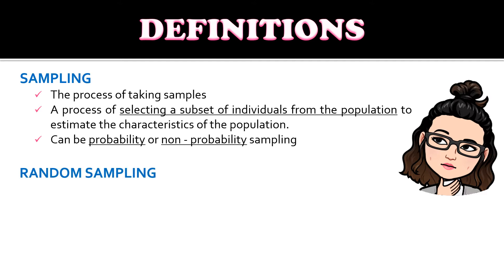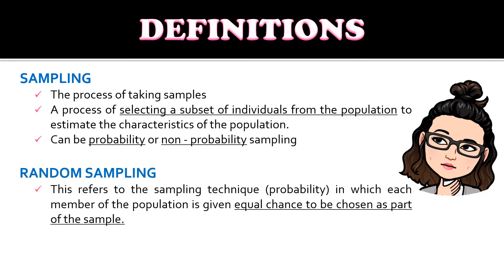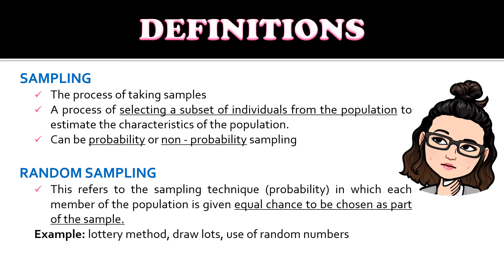Then we have random sampling, which refers to sampling techniques under probability sampling in which each member of the population is given an equal chance to be chosen as part of the sample. Examples of this are the lottery method, draw lots, and use of random numbers.